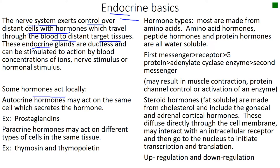Endocrine glands are ductless, while exocrine glands have a duct. Endocrine glands may be stimulated by blood concentrations of ions, like the parathyroid gland, or they may be stimulated by a nerve signal.